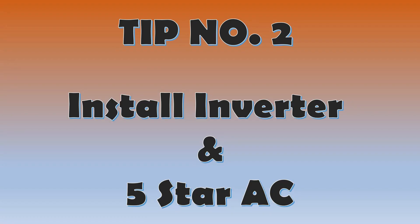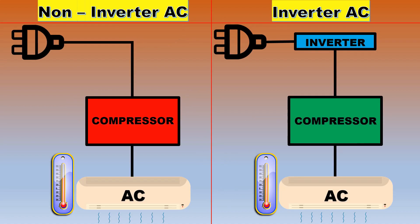Tip number 2 is: Install inverter and 5-star AC. At first we will talk about inverter AC. As we all know, an inverter AC saves more power as compared to a non-inverter AC. But here we will see the working of both these types of AC.